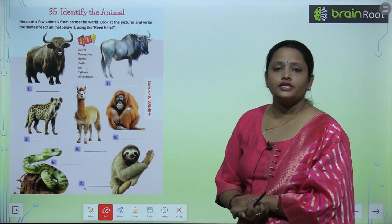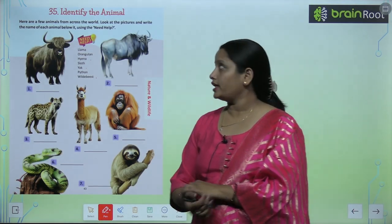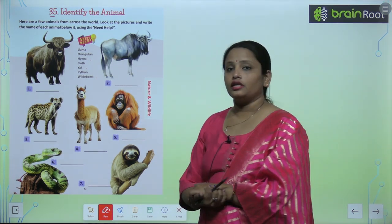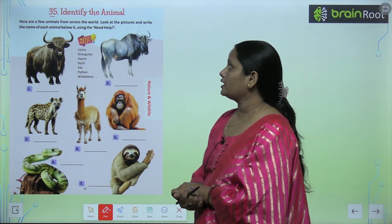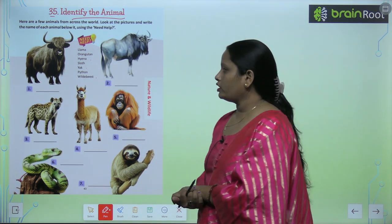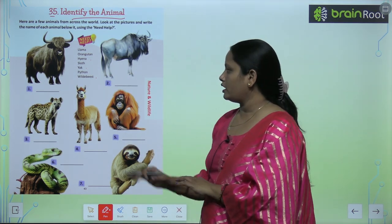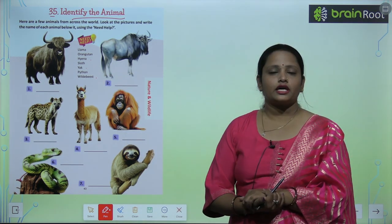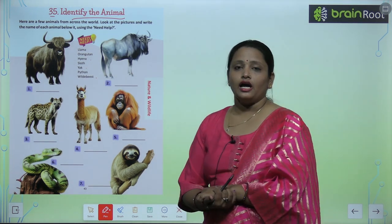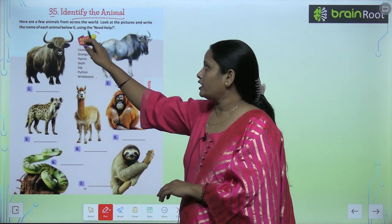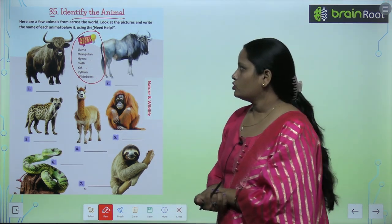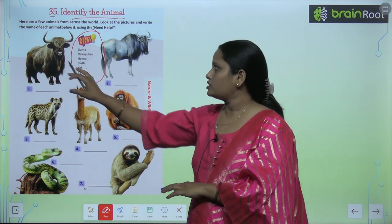So children, let's move on to the next chapter, which is chapter number 35, and the name of the chapter is 'Identify the Animals.' So what you have to do here, the pictures of some animals are given. We have to identify the animals, and we can use this need help box. So here, the first animal —